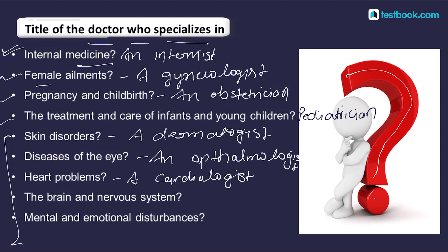Now your brain — the brain and nervous system. The specialist is called a neurologist.